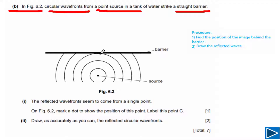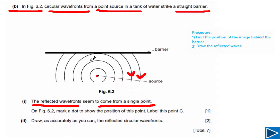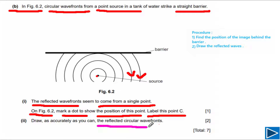The waves are coming from this point source. The reflected wave fronts seem to come from a single point. Looking at these five wave fronts — 1st, 2nd, 3rd, 4th, and 5th — wave fronts 4 and 5 reach the barrier and are reflected. So we need to draw reflected wave fronts for wave fronts number 4 and 5. On figure 6.2, we need to mark a dot to show the position of that point and label it with capital letter C.